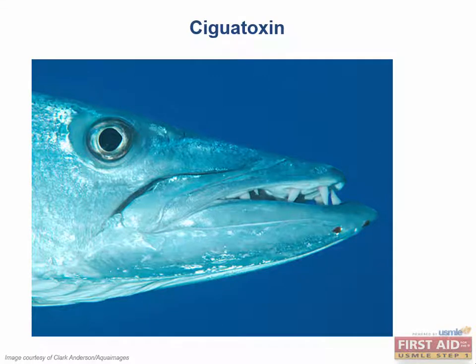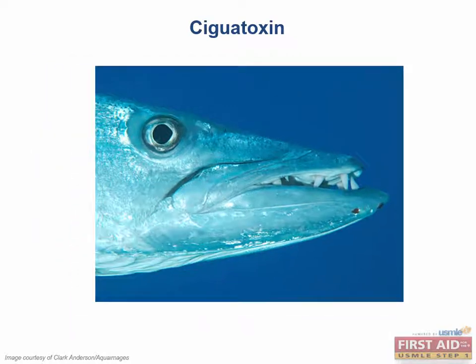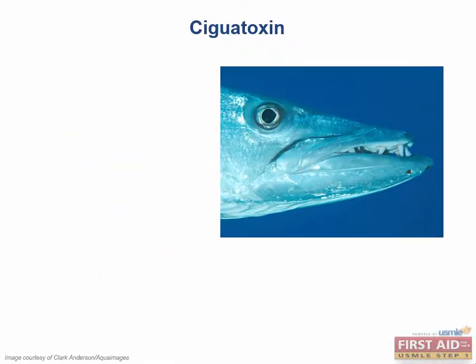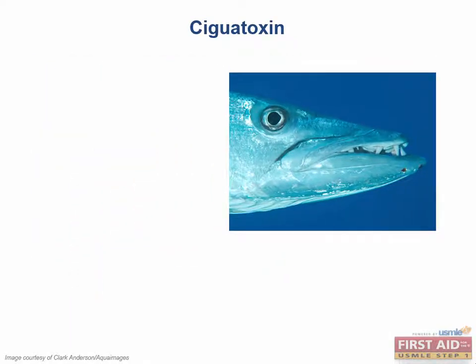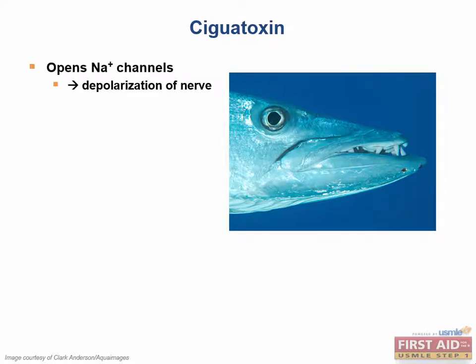Moving back to our discussion of fishy problems, we should now talk about ciguatoxin. Ciguatoxin is caused by consuming reef fish, such as barracuda, snapper, and moray eel. Ciguatoxin also acts on sodium channels, but this time the toxin opens these channels, causing a depolarization of the nerve.